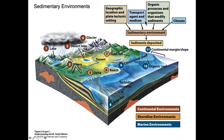We need to consider the transport agent and medium. Transport agents include flowing water, rainfall, wind, and ice. They could also be plants and animals — organic processes and organisms that modify sediment.